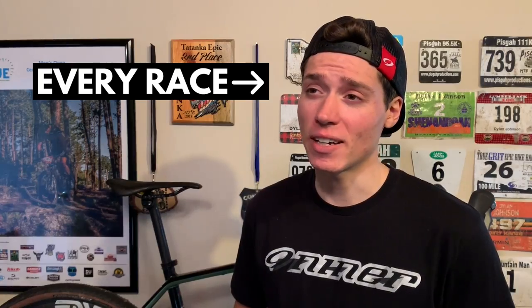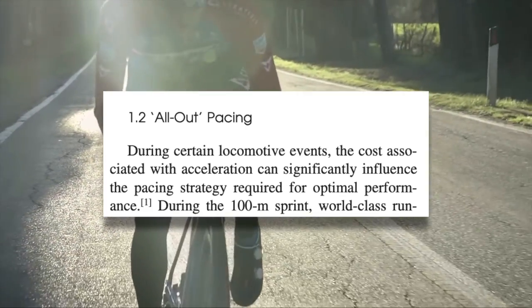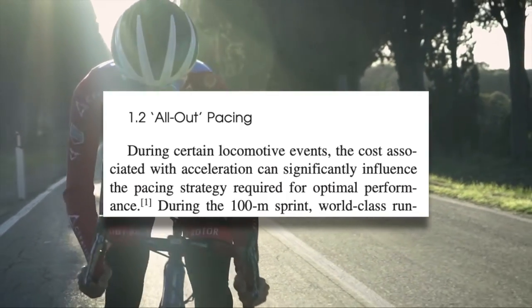The next pacing strategy is more like an anti-pacing strategy and is probably what all of us did at our first bike race when we sprinted off the line at full gas only to feel like we were having a heart attack five minutes later. It's called the all-out strategy — it essentially means that you're throwing pacing out the window and just going as hard as you can. However, this anti-strategy may actually be your best option for certain cycling events or certain situations in cycling races.